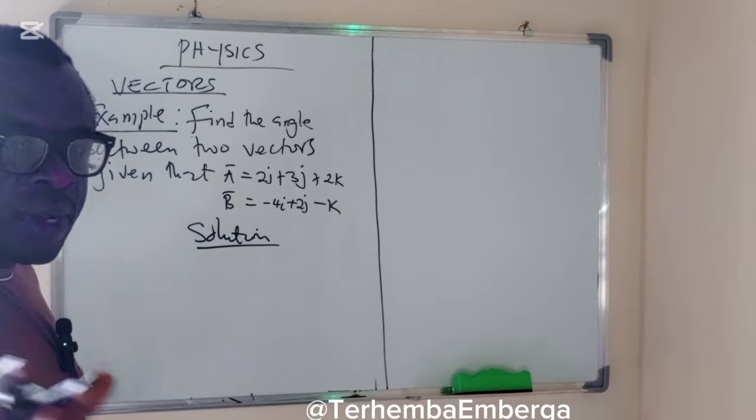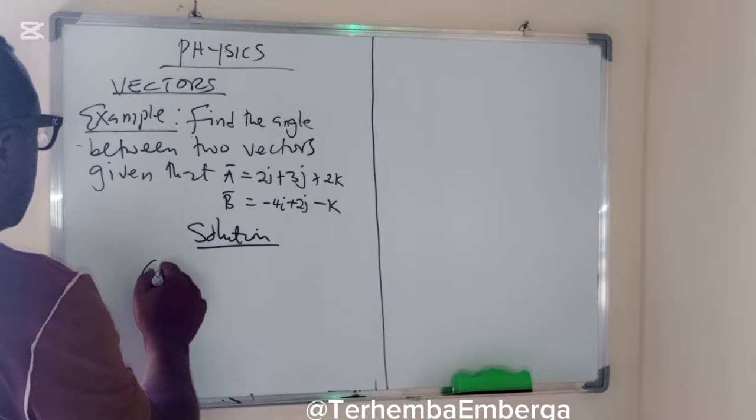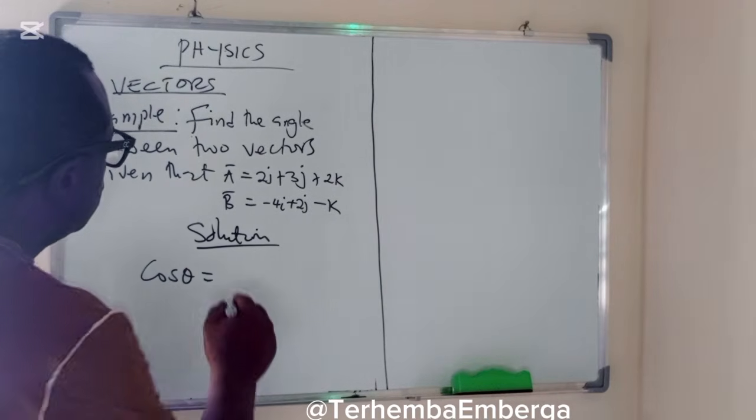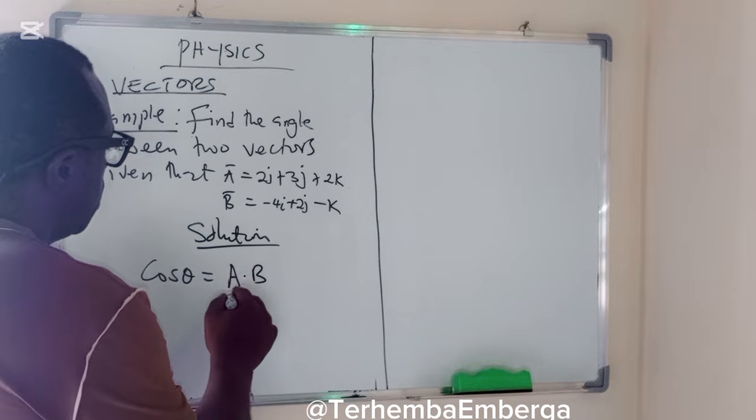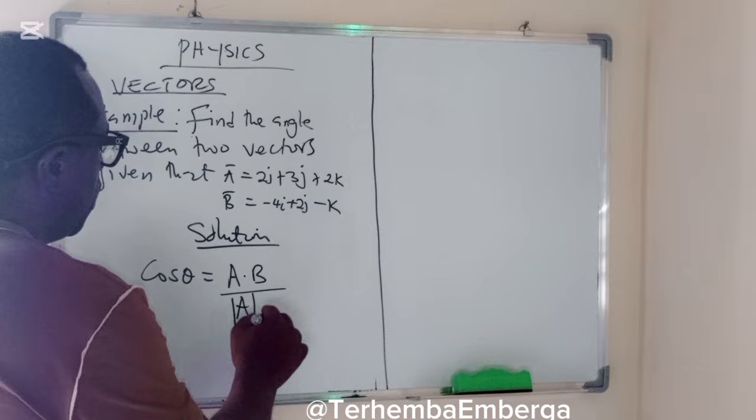The formula for calculating the angle between two given vectors: cos θ equals A dot B, all over modulus of A, modulus of B.